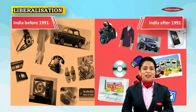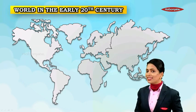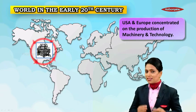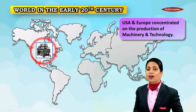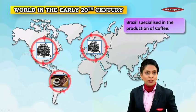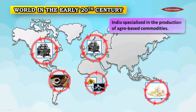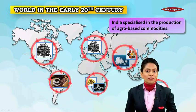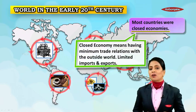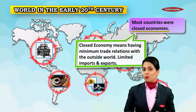What led to this transformation? Before we understand that, let us visit the early 20th century world and find out what the world economy was then. During the early 20th century, production was largely organized within countries. Countries like USA and Europe concentrated on the production of machinery and technology. Countries like Brazil specialized in coffee, South Africa was well known for gold and diamonds, Australia for dairy products, and India specialized in agro-based commodities. Most countries were closed economies, meaning they had minimum trade relations with the outside world.